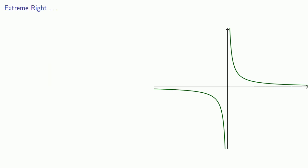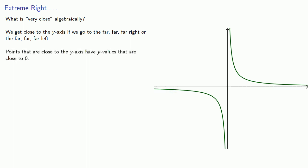Now these terms are geometric terms. So the question is, what is very close algebraically? We get close to the y-axis if we go to the far right or to the far left. Points that are close to the y-axis have y-values that are close to 0.